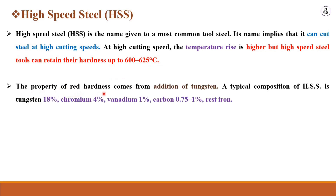The property of red hardness in HSS comes from the addition of tungsten, which is the major constituent. A typical HSS composition contains 18% tungsten, 4% chromium for corrosion resistance, 1% vanadium, and 0.75 to 1% carbon, with the rest being iron. This combination gives high speed steel good characteristics at higher temperatures for cutting hard materials.